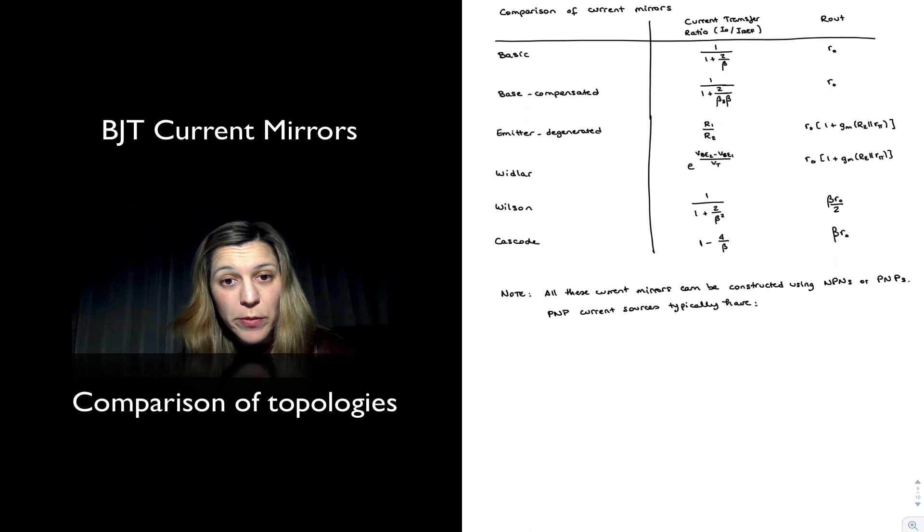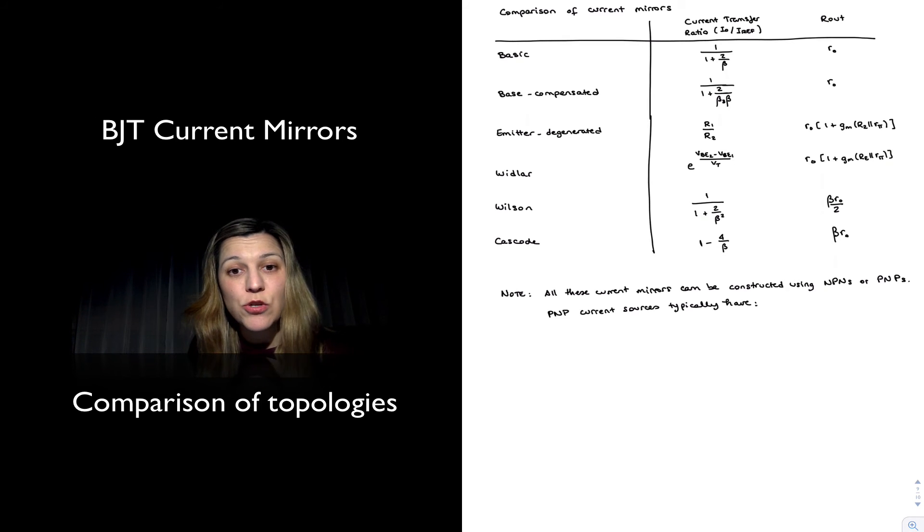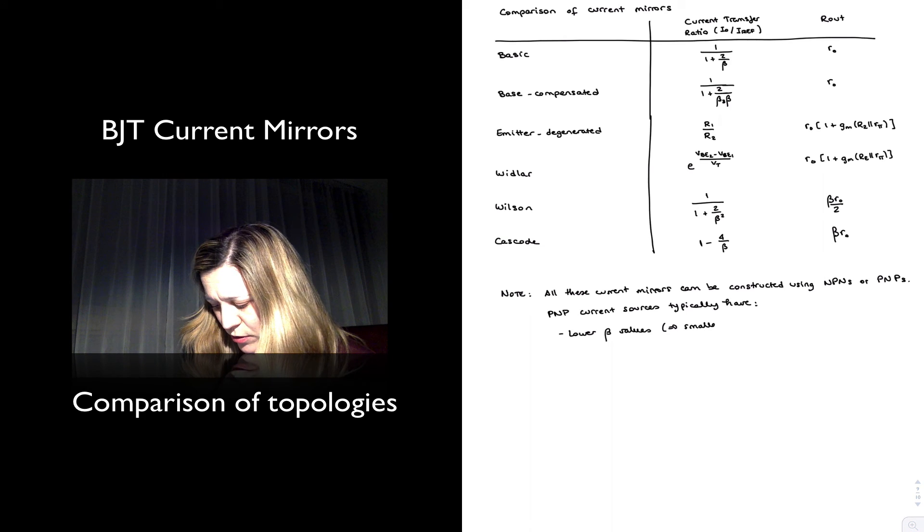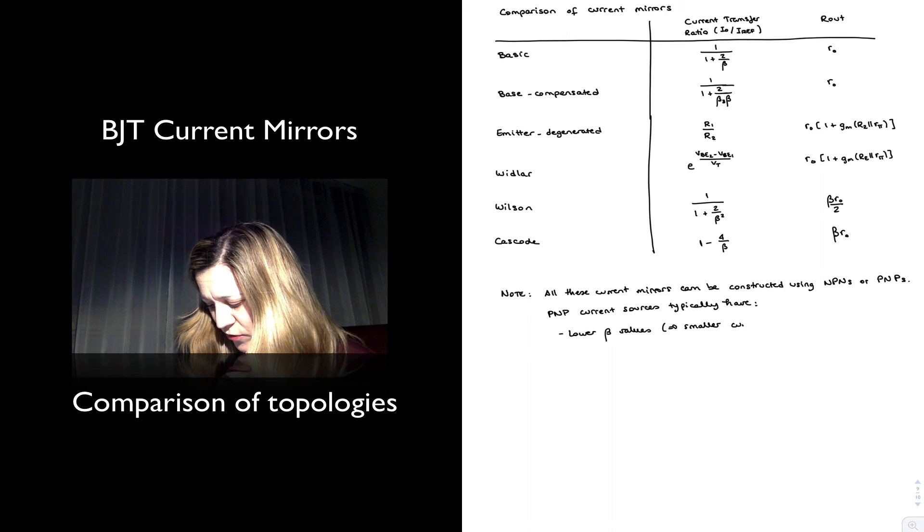One is lower beta values for PNP transistors, which translates into less accurate current sources, so our current transfer ratio is not going to be as good for an NPN current source. So lower beta values will yield smaller current transfer ratios.